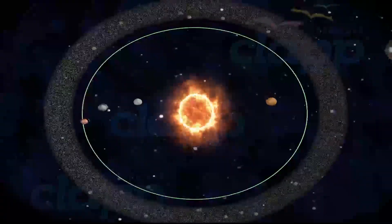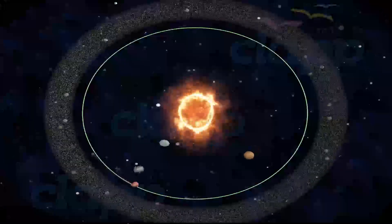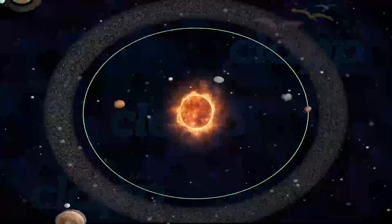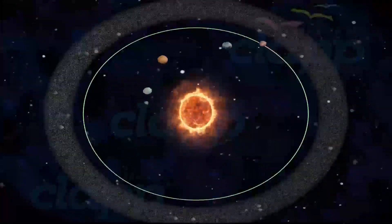Mars is orbiting around the Sun at an average speed of around 24 kilometers per second. It takes 687 Earth days to complete an orbit around the Sun.